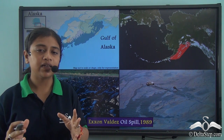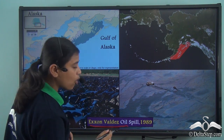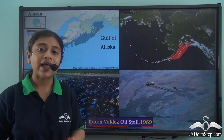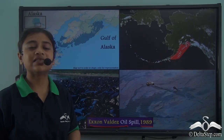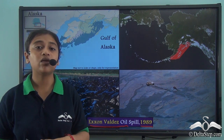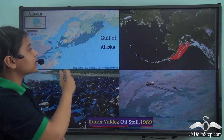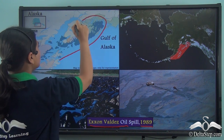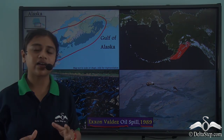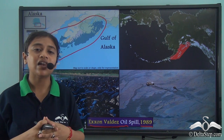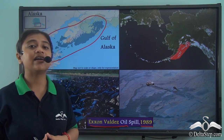Just like the big spill, another major oil spill took place in the Gulf of Alaska. This was known as the Exxon Valdez oil spill, which took place in 1989. Prior to the big spill, the marine environment had already been exposed to one of the largest oil spills in history. The Exxon Valdez oil spill involved the release of around 11 million gallons of oil into the Gulf of Alaska. This happened when the oil tanker named Exxon Valdez ran into a reef and dumped approximately 11 million gallons of Alaskan crude oil into the waters of the Gulf of Alaska.